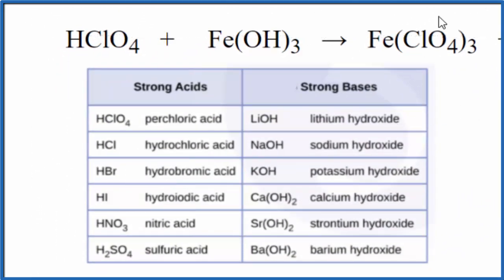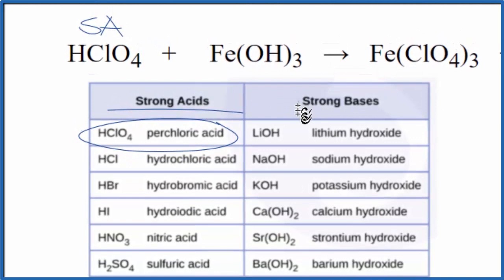So we're looking at the table. Right here is perchloric acid. It's a strong acid, SA, up here. Looking for iron 3 hydroxide and we don't see it on our list of strong bases. So it's going to be a weak base.